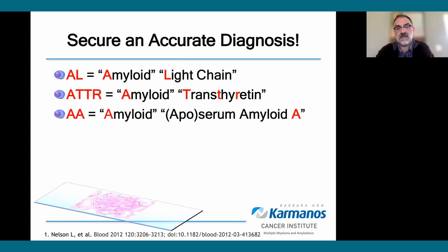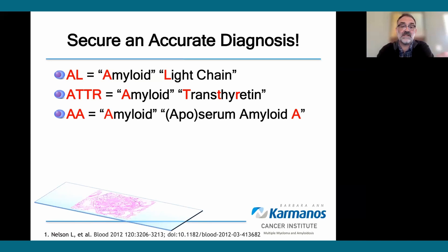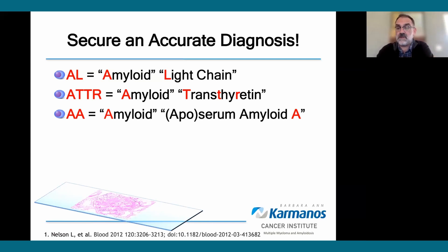The most important first step is securing an accurate diagnosis. The likelihood of a specific organ being involved is dramatically impacted by the type of amyloid we're dealing with. The nomenclature system is A for amyloid, followed by an abbreviation describing the misfolded protein that forms the fibrils. AL is amyloid light chain. The other most common type is ATTR, transthyretin amyloidosis, with mutated forms and also a wild-type where there is no mutation but it still forms amyloid deposits as people age.